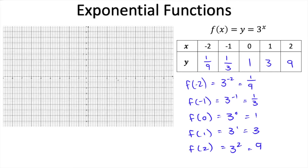Now let's plot our points starting at x equals negative 2, then negative 1, 0, 1, and 2. I'm hoping you're starting to see a general trend of what this data looks like. The next step is just to connect the dots with a nice smooth line. And that is our exponential function.